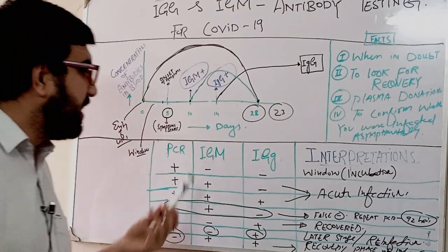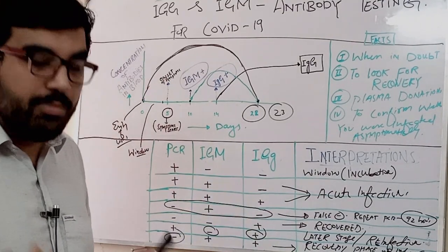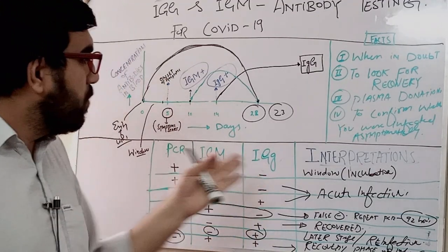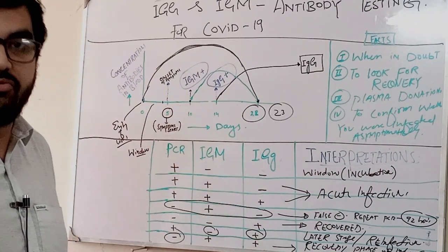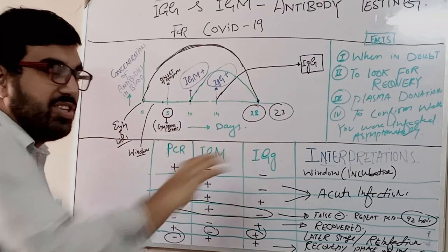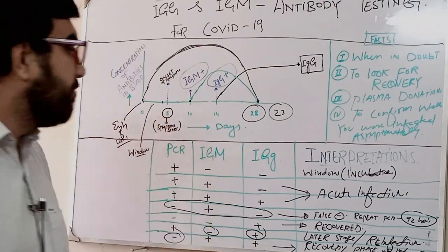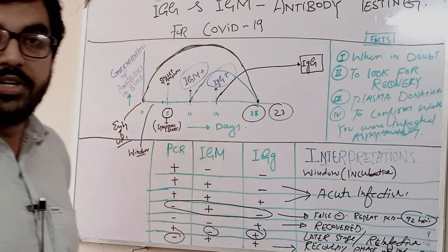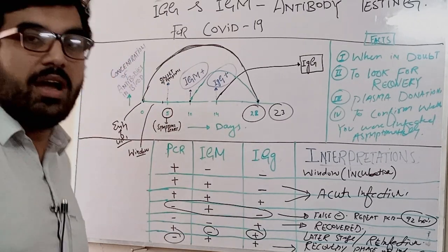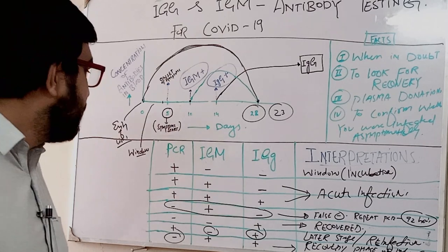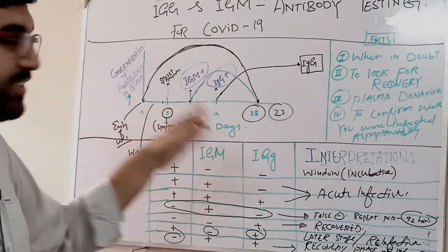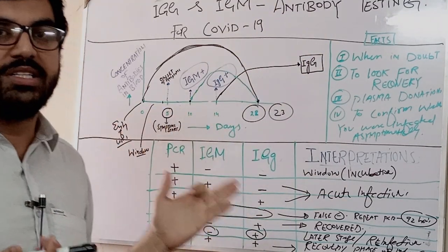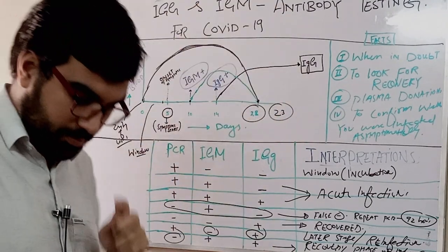One important consideration: IgM and IgG are antibodies, so if a patient is severely immunocompromised, these antibodies will not be produced. So in a severely immunocompromised patient with PCR positive but IgM and IgG negative, we can still think of acute infection. Though the gold standard is always PCR, this was a short overview of antibody testing and the four indications for when to use it. Thank you for watching.